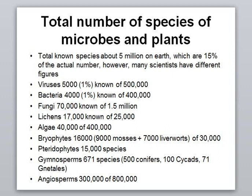Similarly, for fungi, algae, bryophytes, and pteridophytes — and in the case of angiosperms (flowering plants) — there are an estimated 800,000 species currently existing, but we know only about 300,000. This means we still have the capacity to investigate a further 500,000 angiosperm species.